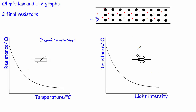For an LDR, exactly the same thing happens except instead of being affected by temperature, it is affected by light intensity. The more light that shines on it, the light gives energy to the ions, which frees electrons up. With more free electrons a current flows, and so we observe the resistance going down.